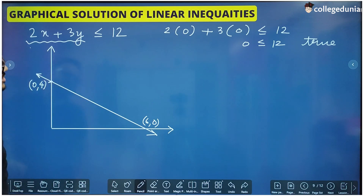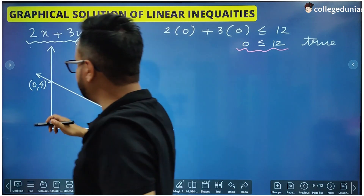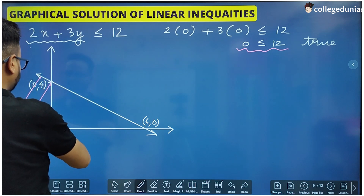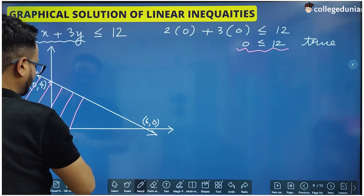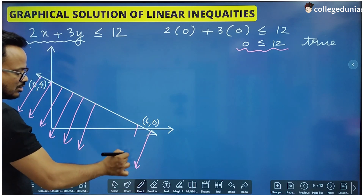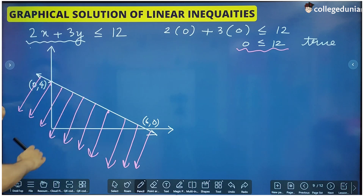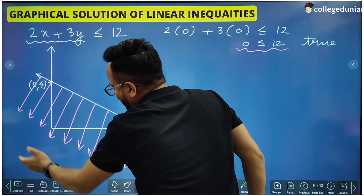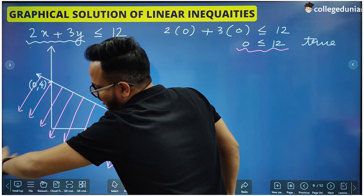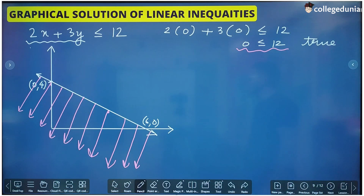Since we need the region where the answer is less than 12, and (0, 0) satisfies the inequality, all values in that same region also satisfy it. So that part is the solution region. Generally we shade the solution region, but if shading takes too much time you can draw lines with arrow signs to indicate the solution region. This is an unbounded region because there is no boundary on that side — you can put any point to infinity in this region and the answer will be less than 12.